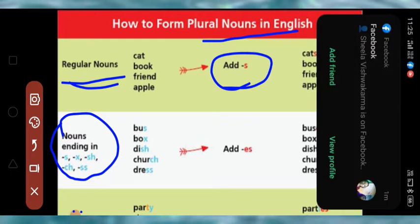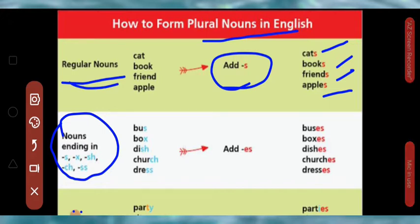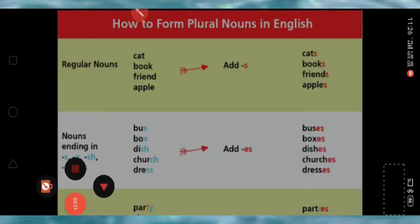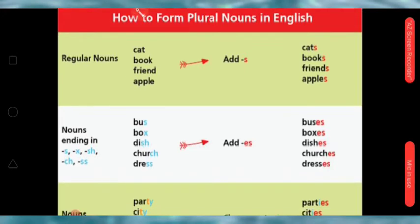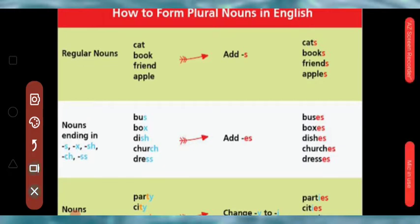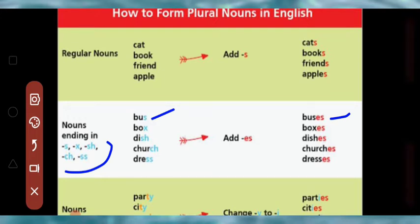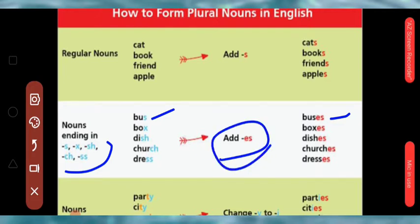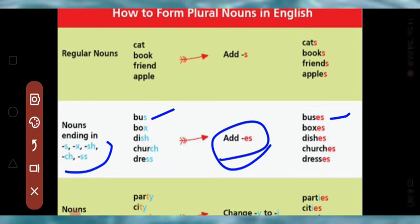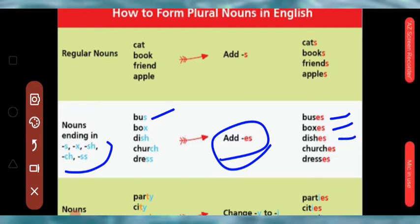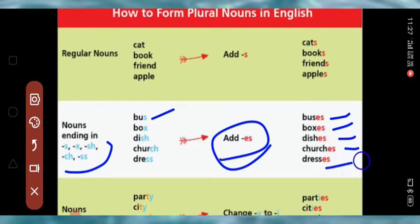Some nouns end in SH, CH, SS, S, X, or Z. For these, we add ES to make them plural. For example: bus ends with S, so we add ES — buses. Box becomes boxes, dish becomes dishes, church becomes churches, and dress becomes dresses. This is the rule for changing singular nouns ending in these letters into their plural forms.